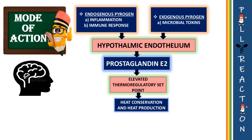There are two types of pyrogens. The first is endogenous pyrogens, which are released during an inflammatory process in the body. The other is exogenous pyrogens, such as microbial toxins like endotoxins. These pyrogens reach the hypothalamic endothelium and trigger the release of prostaglandin E2 (PGE2), which elevates the thermoregulatory set point, resulting in heat production — that is, fever.